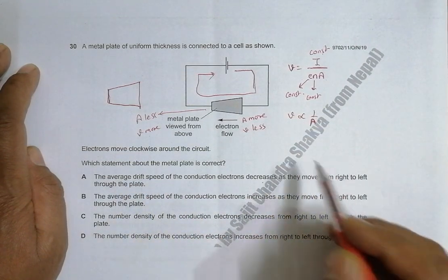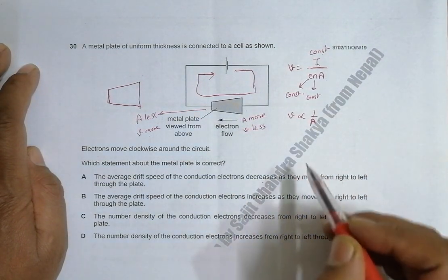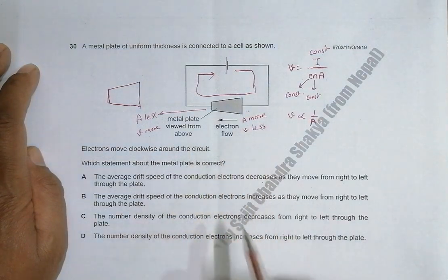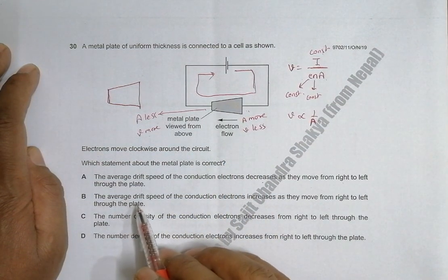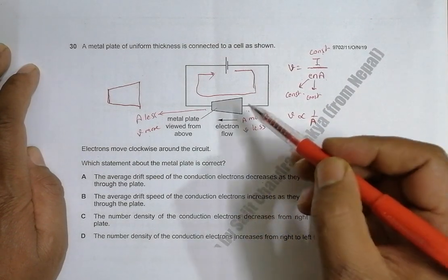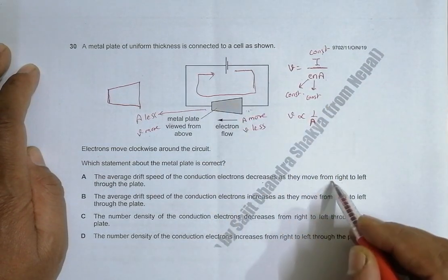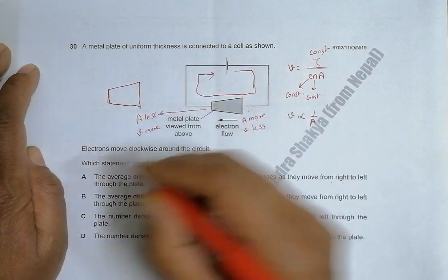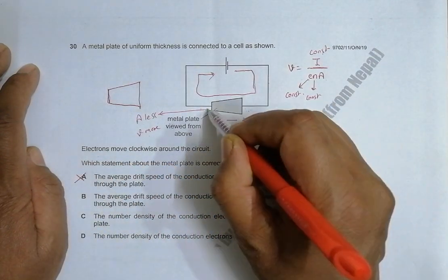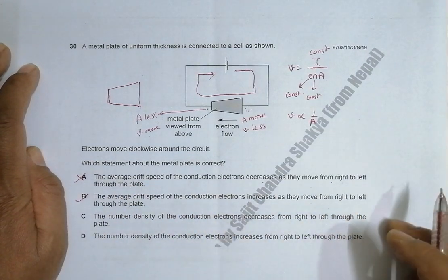The first statement says drift speed decreases from right to left — meaning it is higher on the right and lower on the left — which is not correct. The second statement says drift speed increases from right to left, which is correct.